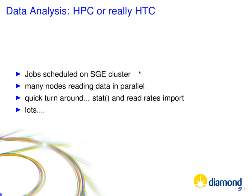Once the data is collected, we process it on the cluster. Many nodes read the data in parallel, and some processes insist on statting all the files to make sure they're on the file system. So stat rates and read rates are very important on that side. Overall, as is typical for HPC, it's basically a lot. We have a large number of CPU nodes and typically optimize our file systems for write performance, because that's what the detectors care about. But when you actually look at it, the read rates are typically a factor of five to ten higher than the write rates — so that's what our file systems have to deal with.